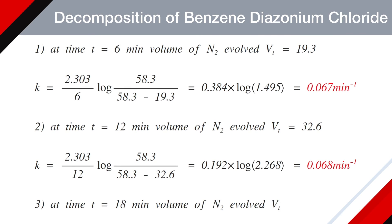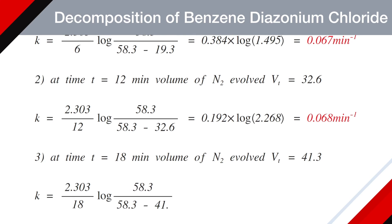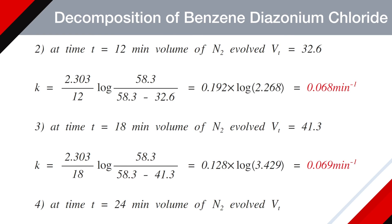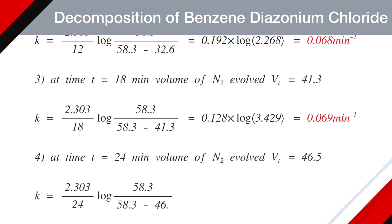At time T equals 18 minutes, volume of nitrogen is 41.3 mL. So K becomes 2.303 divided by 18, log of 58.3 divided by (58.3 minus 41.3), which is 0.128 × log(3.429), and finally K = 0.069 min⁻¹. At time T equals 24 minutes, volume of nitrogen evolved is 46.5 mL. So K is 2.303 divided by 24, log of 58.3 divided by (58.3 minus 46.5), which is 0.096 × log(4.941), and finally K = 0.067 min⁻¹.